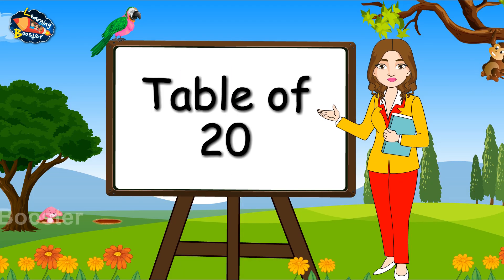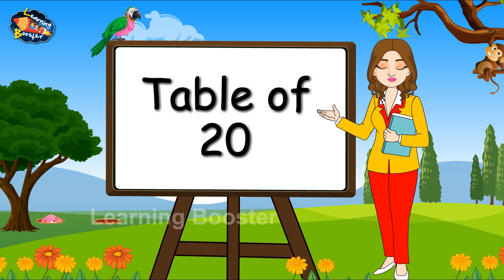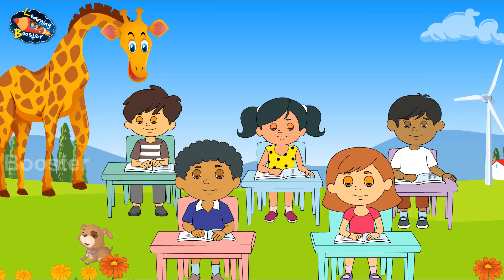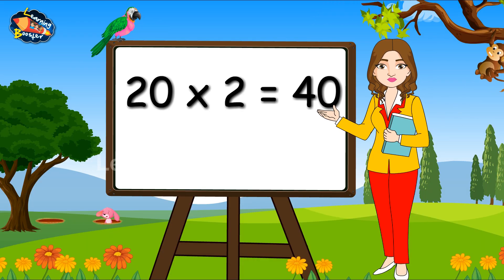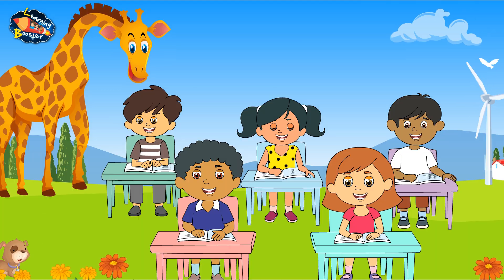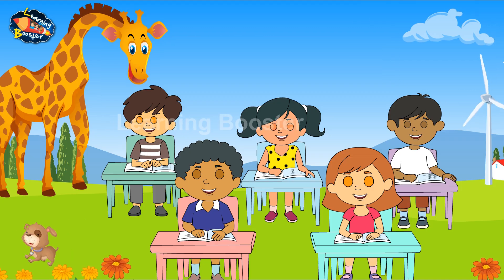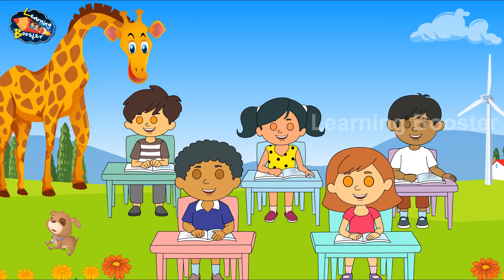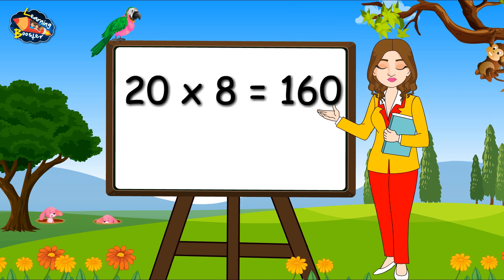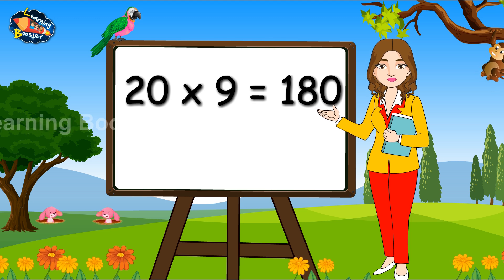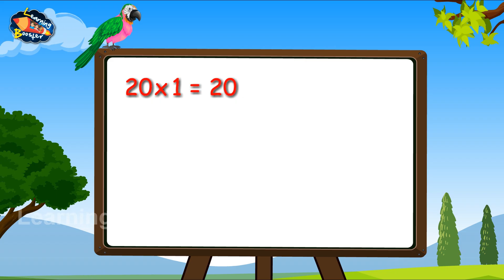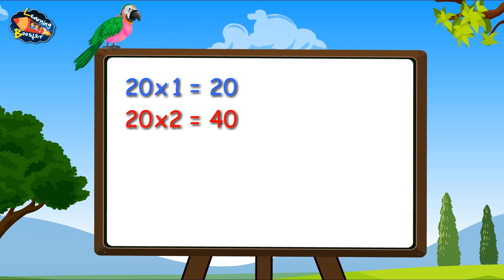Table of Twenty. 20-1s are 20. 20-2s are 40. 20-3s are 60. 20-4s are 80. 20-5s are 100. 20-6s are 120. 20-7s are 140. 20-8s are 160.